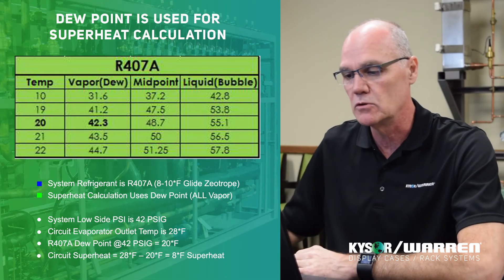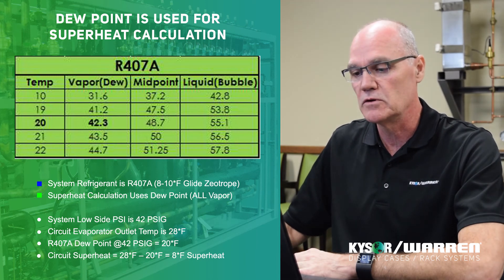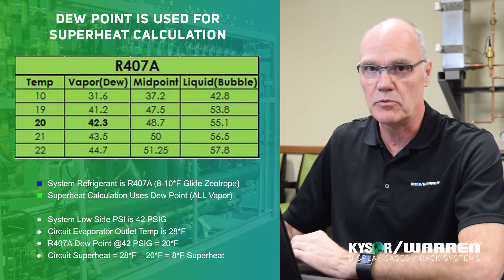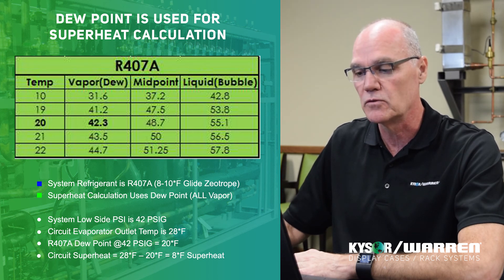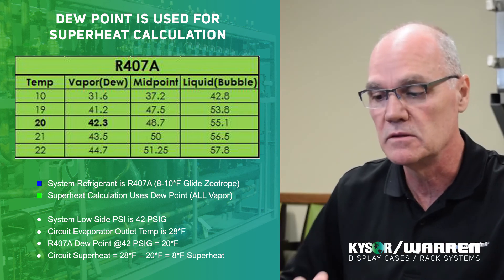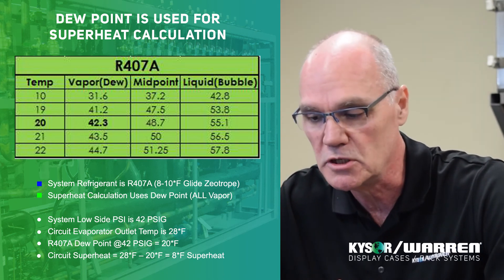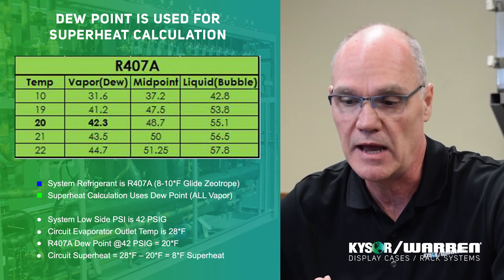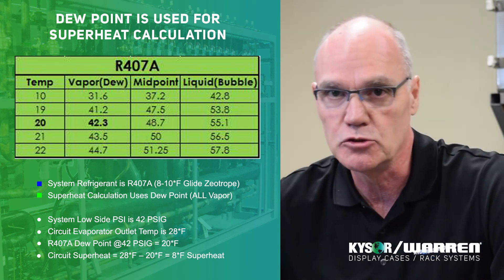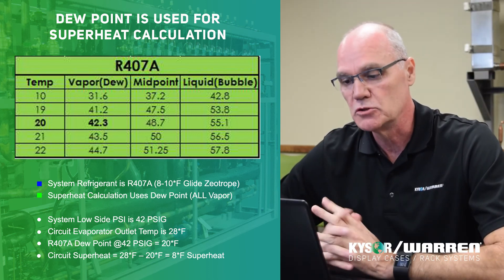I would always recommend using the dew point when setting superheat at an evaporator. As you would for any refrigerant with a lower glide, you would determine — say your evaporator temperature needs to be 20 degrees. You would look on your chart and set your system up for a pressure of 42 to 43 psi. Then you would adjust your expansion valve to around 28 degrees at the outlet of the evaporator, giving you 8 degrees of superheat. And your system should work fine.